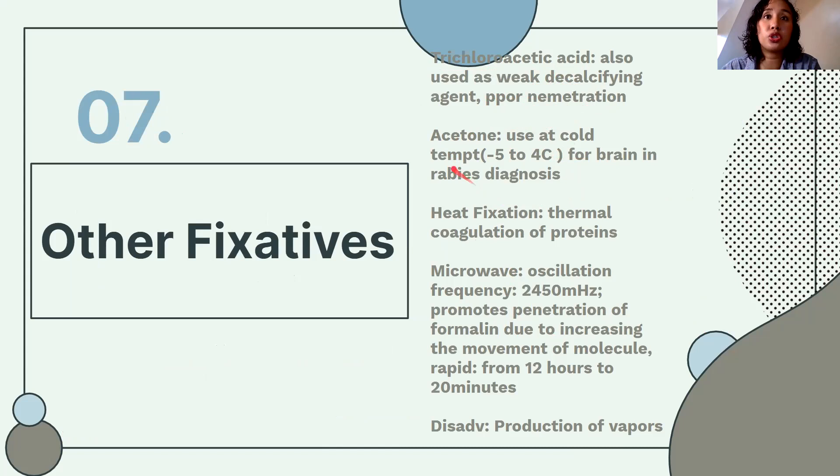Heat fixation works by thermal coagulation of proteins. You may recall from microbiology that when you fix slides for Gram staining, you strip the specimen on your slide and heat it on a Bunsen burner — that is heat fixation.